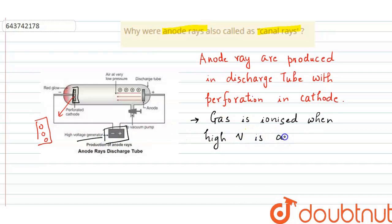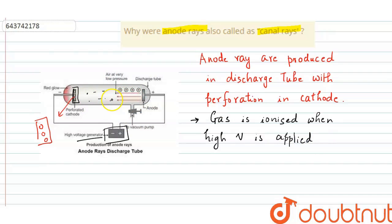When high voltage is applied across the electrodes, the gas inside the discharge tube gets ionized and we get many number of particles from the ionization of the gas. The beam of positively charged particles moving from the anode toward the cathode is called anode rays.